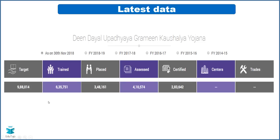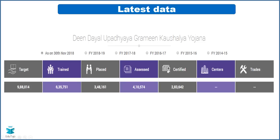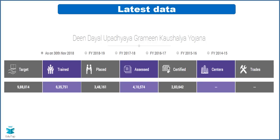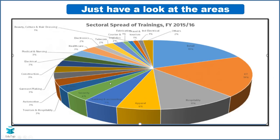This is the latest data taken from the official ministry website for DDU-GKY, as on 30th November 2018. You can see targets, how many have been trained, and how many have been placed. You do not need to memorize all these numbers now, but as the examination nears, make sure you have an idea of at least the trained figures by visiting the official website.